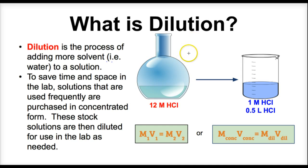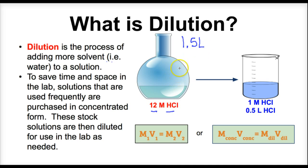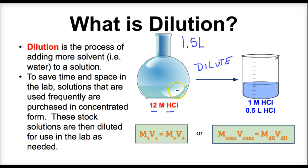Each year at our school we end up buying super concentrated hydrochloric acid — 12 molar hydrochloric acid, which is some of the strongest you can buy. We purchase about 1.5 liters of this stuff and it ends up lasting us all year, even though it's not that much. How does 1.5 liters go around for thousands of students? Well, what we end up doing is diluting it. This concentrated HCl can cause severe damage to skin, and if it got in your eyeballs it might make you blind — some pretty nasty stuff.